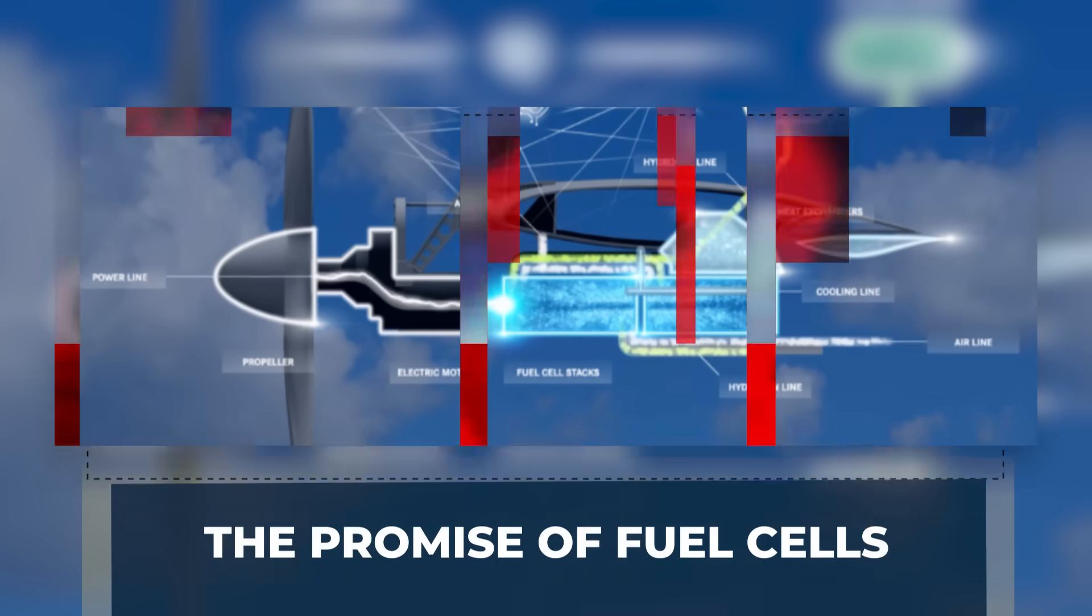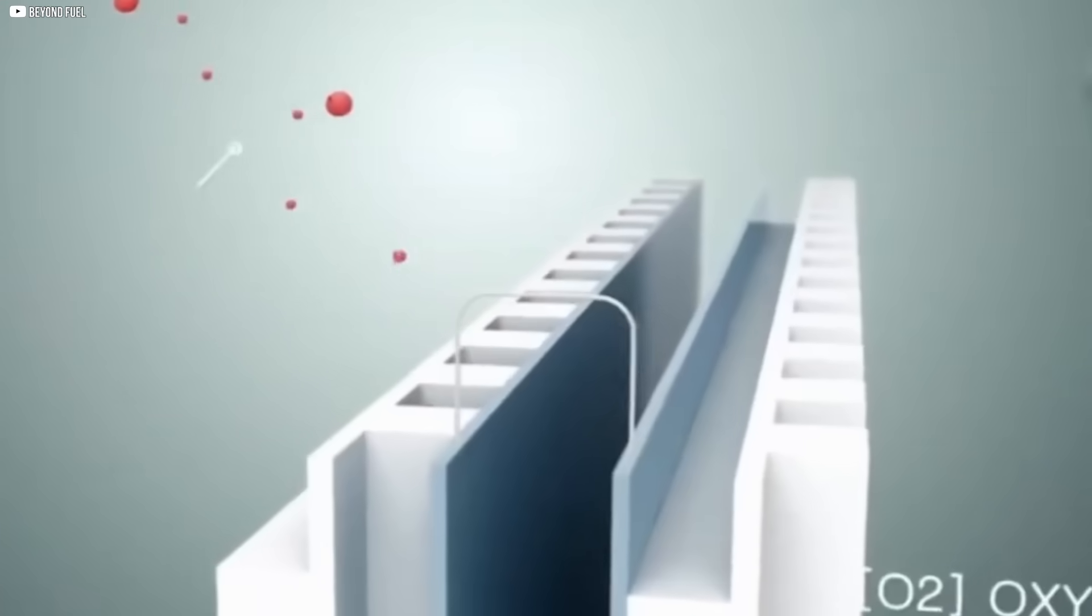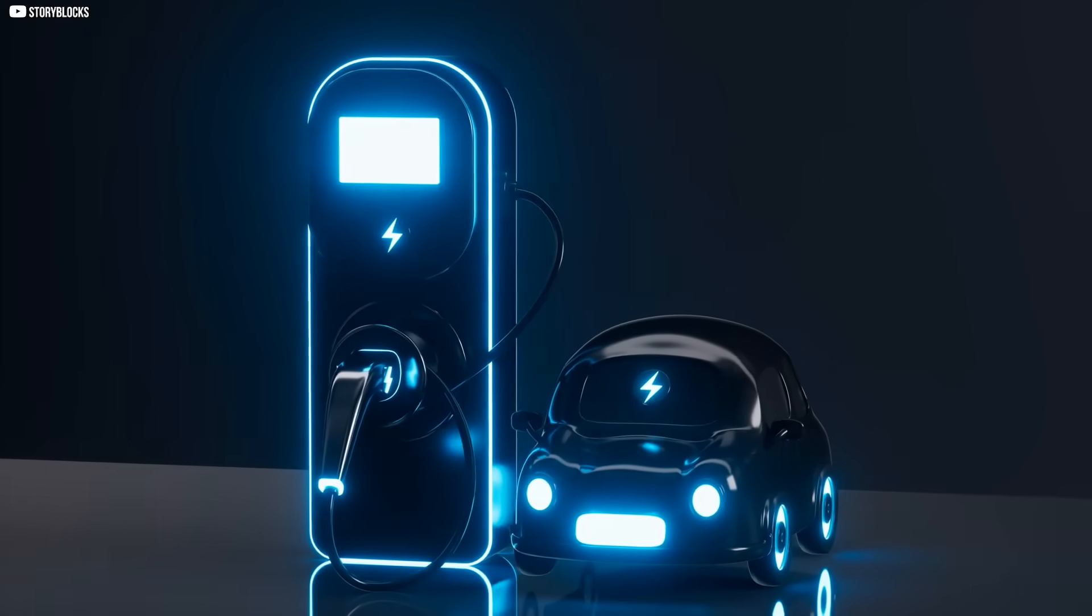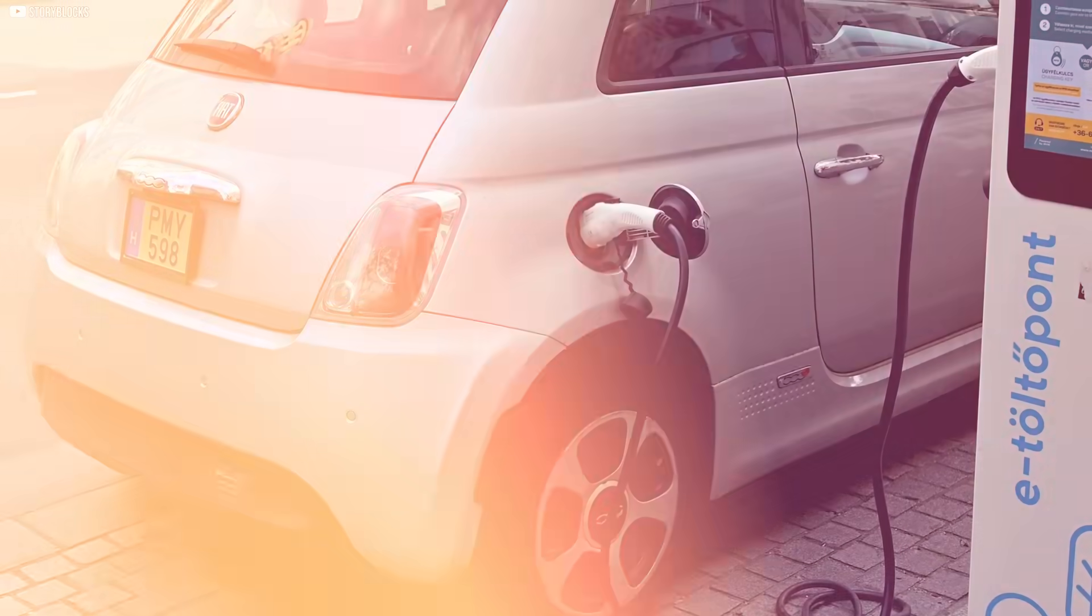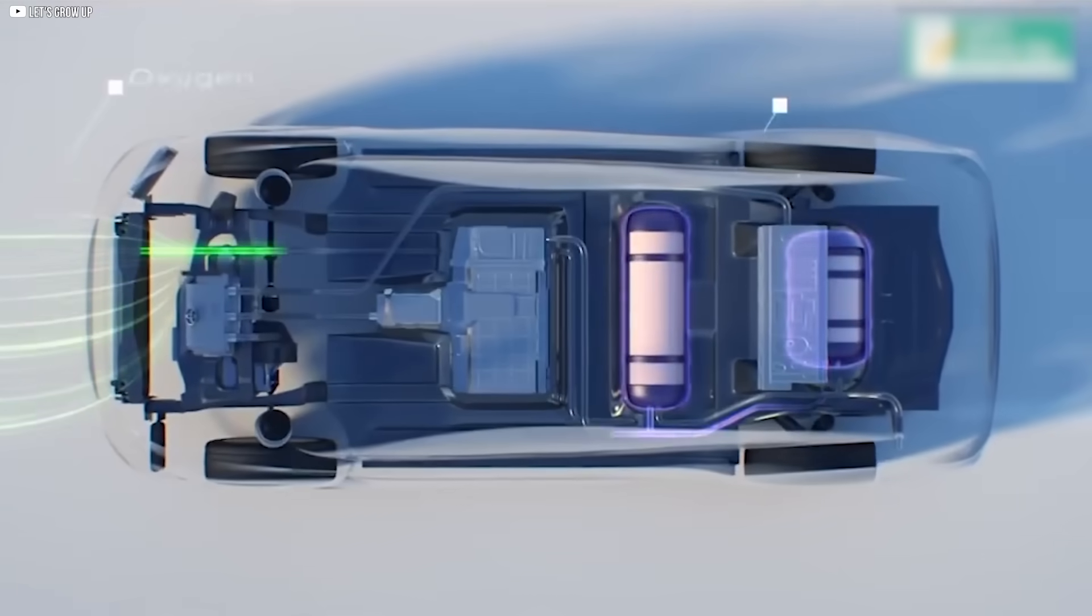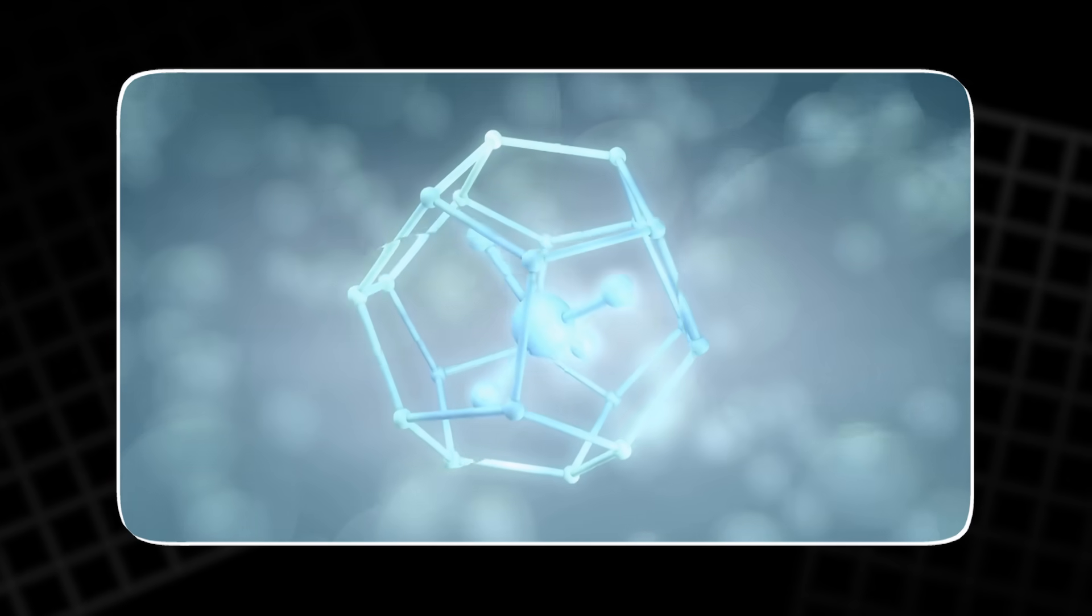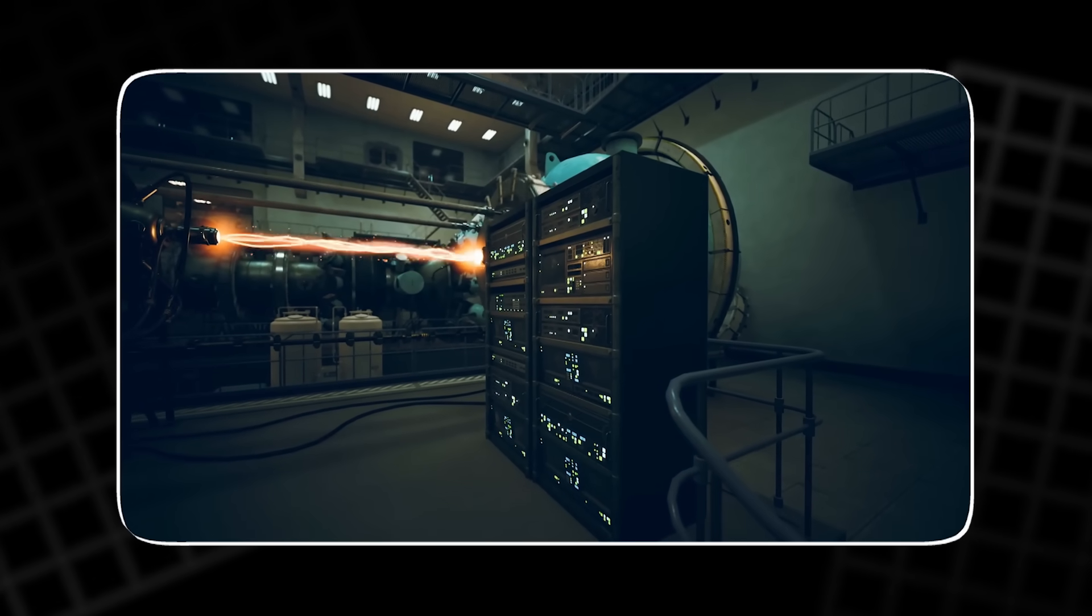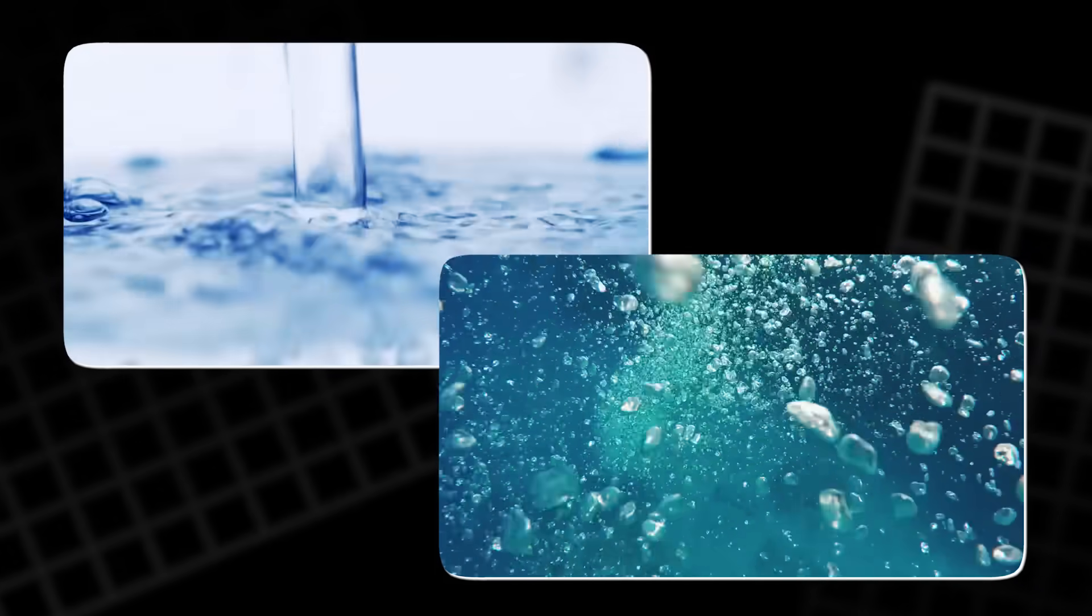Fuel cells have long been seen as the middle ground between fossil fuels and batteries. They offer the clean electricity of batteries without long charging times or bulky weight. Most commonly, they rely on hydrogen. In a typical hydrogen fuel cell, pressurized hydrogen gas is fed into the system, where it reacts with oxygen to generate electricity. The only byproduct is water. Clean, simple, and seemingly ideal.